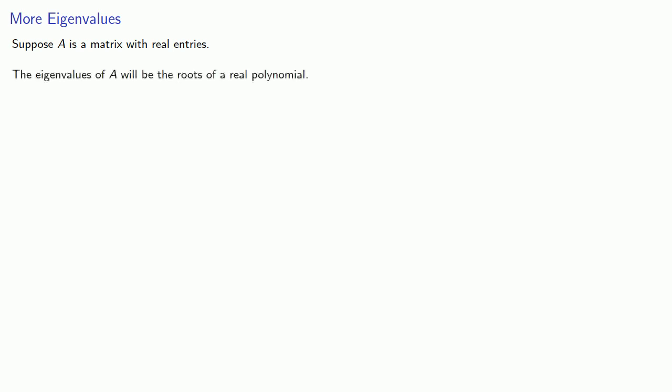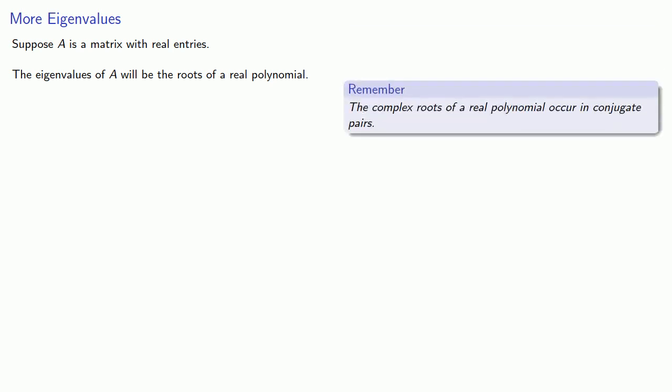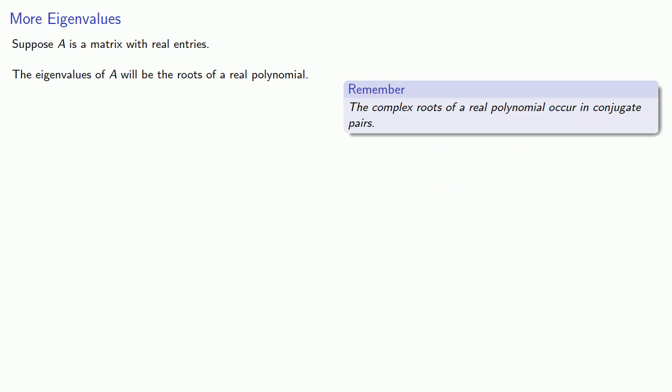Suppose A is a matrix with real entries. The eigenvalues of A will be the roots of a real polynomial — that is, a polynomial with real coefficients — and the complex roots of a real polynomial have to occur in conjugate pairs. So that means if lambda is an eigenvalue, so is the conjugate of lambda.